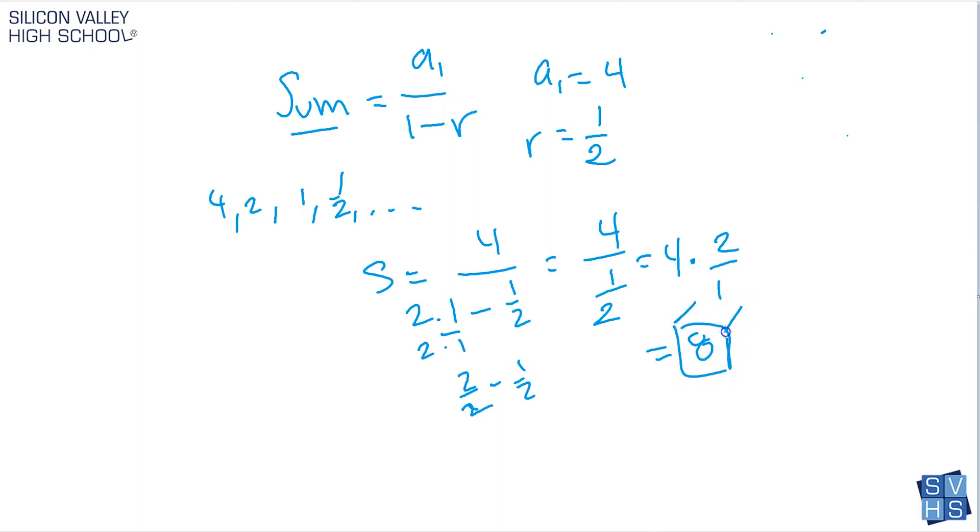And so that is my sum of my infinite geometric series that I had here. And so it's pretty easy if r qualifies, if the common ratio r qualifies, finding the sum is not that hard. a to the 1 over 1 minus r, do this fancy fraction trick, multiply that by the reciprocal, and you're done.